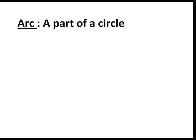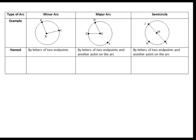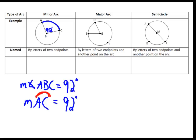So what's an arc? An arc is basically the part of the circle that is created by that central angle. Arc AC — that part of the circle — is an arc. There are three different classifications for arcs. The first is a minor arc, which has a measure less than 180 degrees. When we name a minor arc, we always use two letters — the endpoints of the arc. The measure of arc AC equals the measure of its central angle, so if angle ABC is 92 degrees, the measure of arc AC is also 92 degrees.